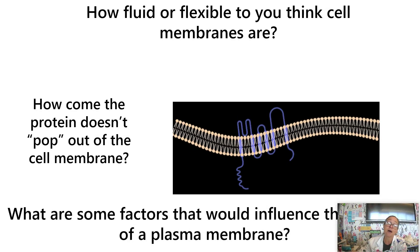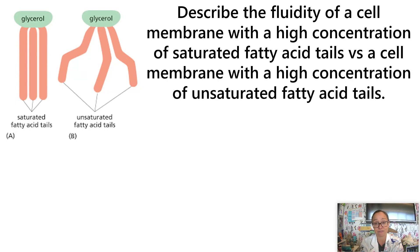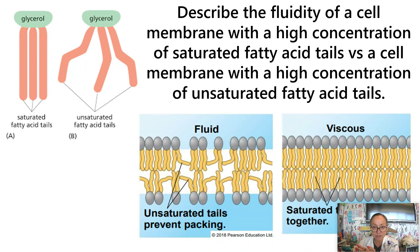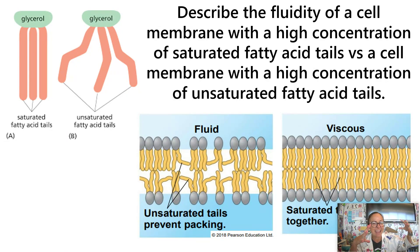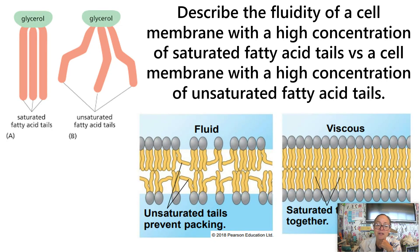Going back to unit one on saturated and unsaturated fatty acids: saturated fatty acids are solid at room temperature because they pack closely together, while unsaturated fatty acids are liquid at room temperature. If a cell membrane has a high percentage of unsaturated fatty acids, it will be a very fluid membrane. On the other hand, all saturated fatty acid tails produce a very thick, viscous membrane that would hinder diffusion of molecules like oxygen and carbon dioxide. Most cell membranes have a combination of saturated and unsaturated fatty acids to help maintain appropriate fluidity.